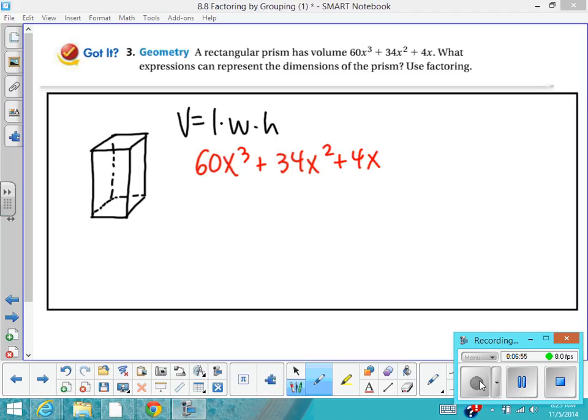So I'm going to do that just the way I know how. First things first, I'm going to look for a GCF. And I see one, and I see that the GCF is x. So I'm going to make it times the quantity of, and it's going to be 60x² plus...